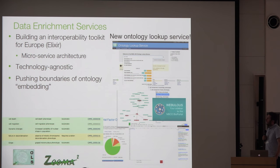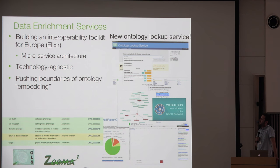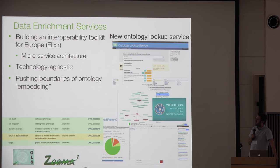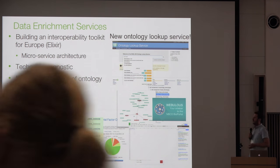We think of these as data enrichment services. We now have funding from Elixir and a couple of projects to build an interoperability toolkit — a set of services that help in the process of taking raw metadata and annotating it with ontologies. We have services like the Ontology Lookup Service, a Webulous service for creating ontologies with a plugin for Google Spreadsheets, and our Zooma service, which is a text-to-ontology mapping service and our main curation platform. It captures all curated knowledge so we can learn from this repository to curate new unseen data.